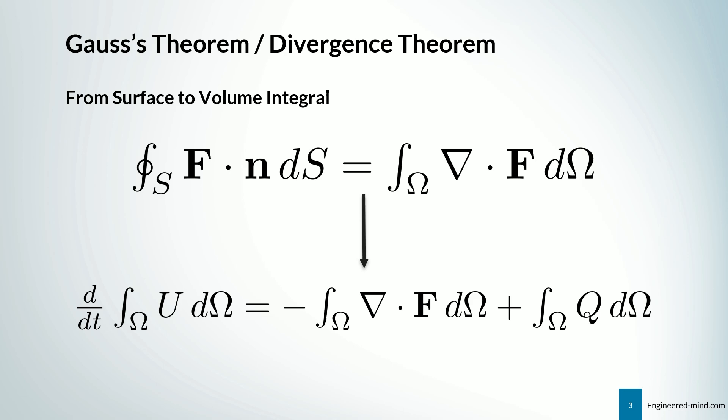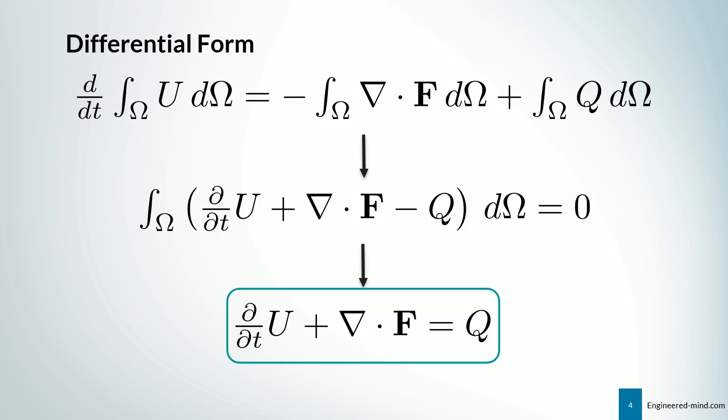This gives us the final integral form. We can do further processing to derive the differential form of this equation. The assumption for the differential form is that the choice of our control volume omega is arbitrary, meaning the equation must also be valid locally at any point. We can drag out d-omega and end up with the final form: d/dt of U plus the divergence of the fluxes equals the sources. The condition for the validity of this differential form is differentiability of the solution — so if we have a discontinuity such as a shock wave, we should use the integral formulation instead.